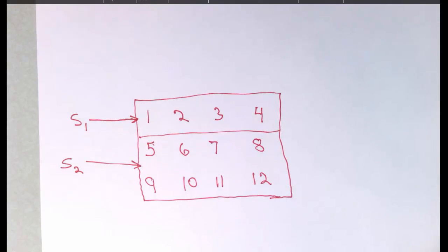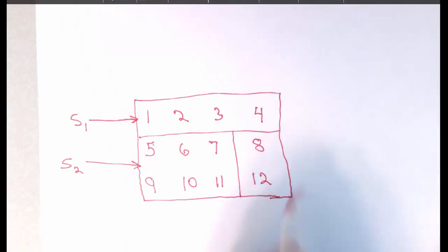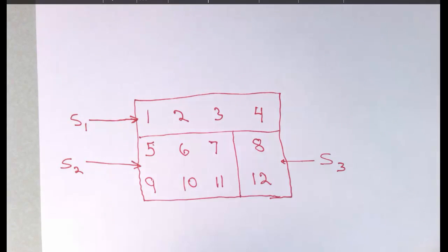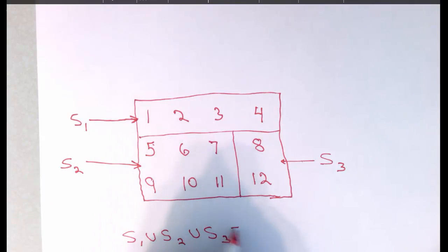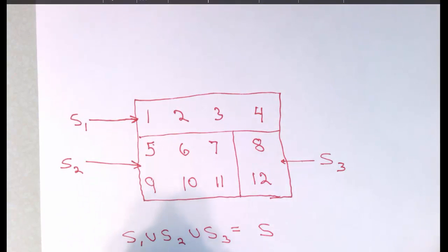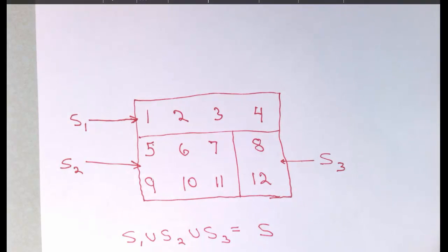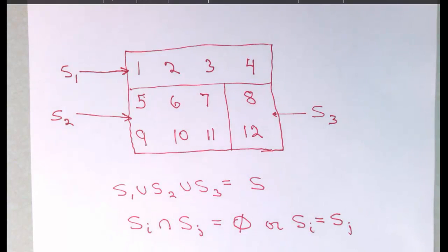These partitionings don't have to have subsets of the same size or any obvious pattern. We could subdivide further and call part of a subset S3 — that's a perfectly good partitioning. The key is that S1 union S2 union S3 is the whole set, and if we take any two of these subsets and look at their intersection, it's either empty or the two subsets are in fact equal. So we have a partitioning, and this induces an equivalence relation on the set 1 through 12.